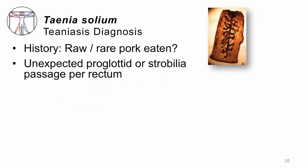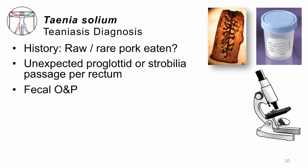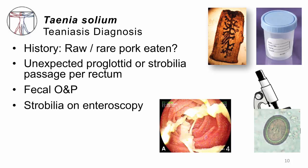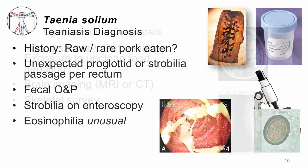How will you make a diagnosis? In the case of teniasis, just take a history — have you recently consumed raw or rare pork, and have you passed a proglottid or a long chain of tapeworms? If so, there's your problem. You can also look for eggs on a fecal ova and parasite exam. If you see round eggs that look exactly like the eggs of the beef tapeworm, you've made your diagnosis. On occasion, patients will have endoscopy, and the gastroenterologist will see the tapeworms right then and there. Most of these patients do not have a high eosinophil count.